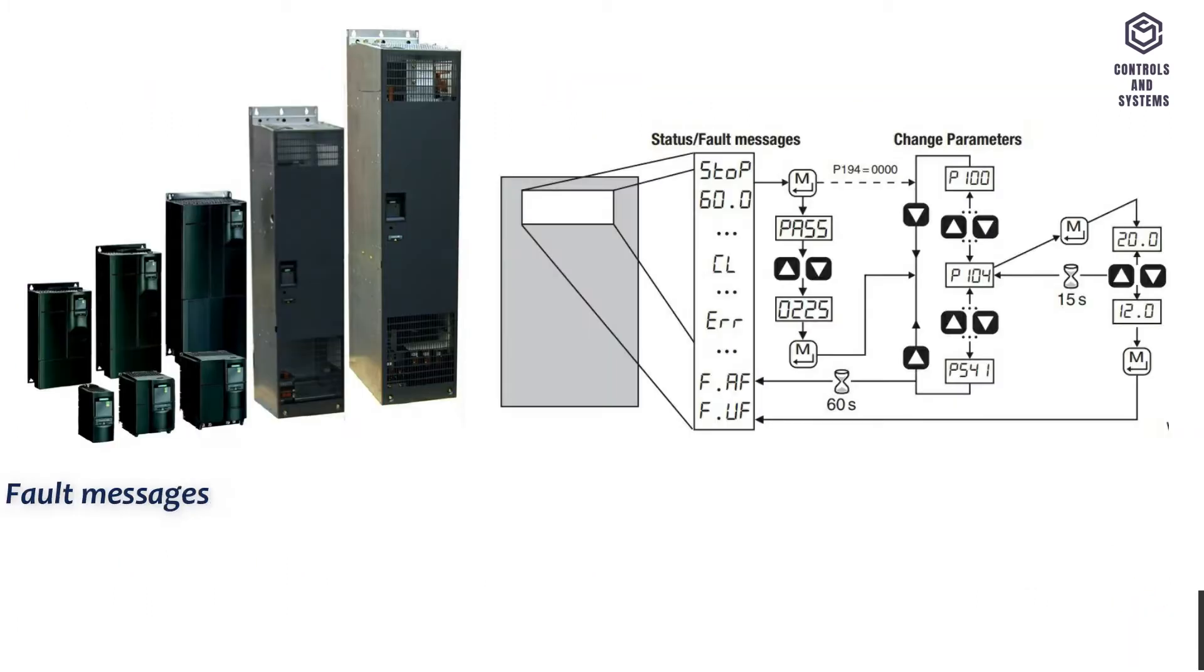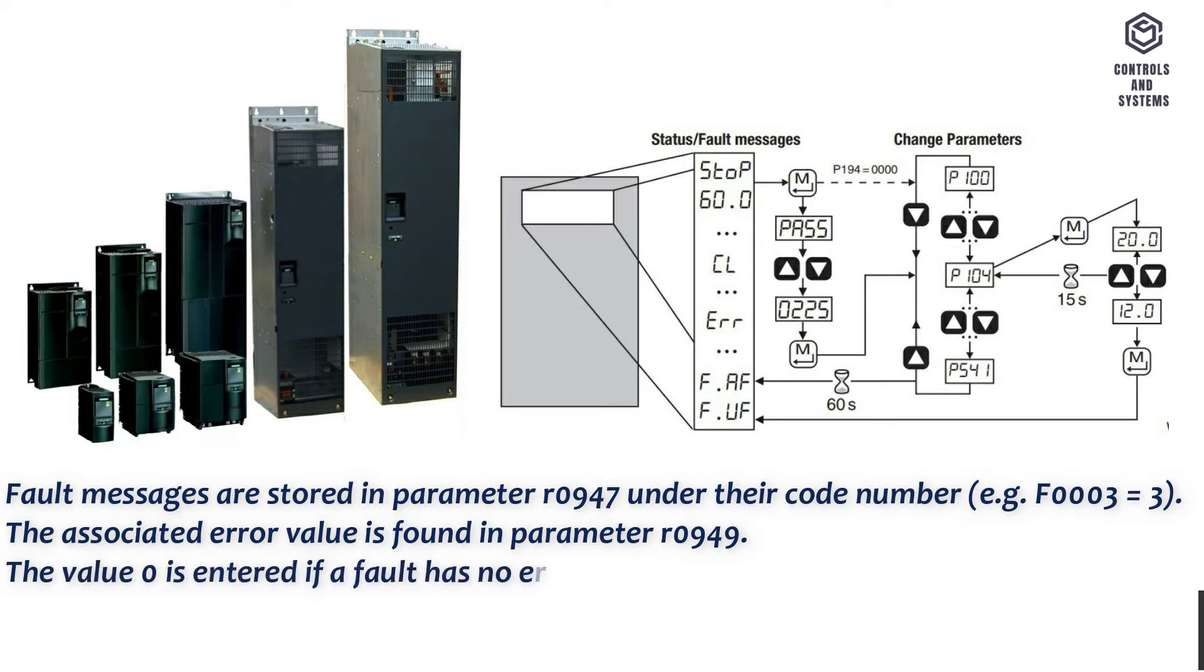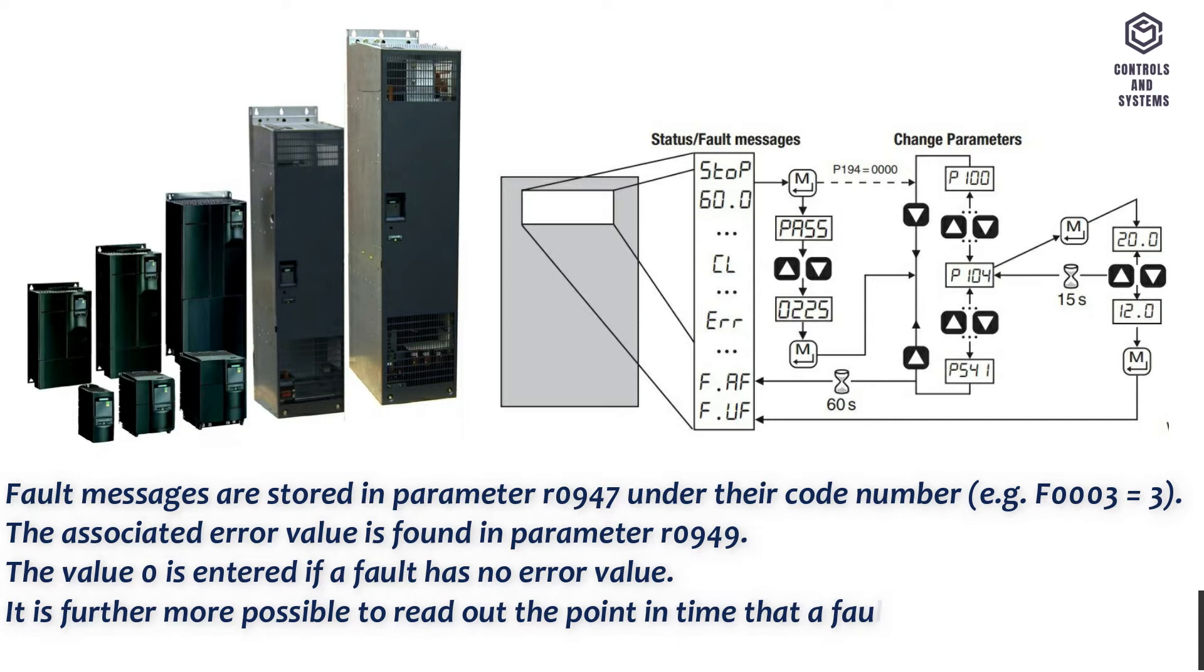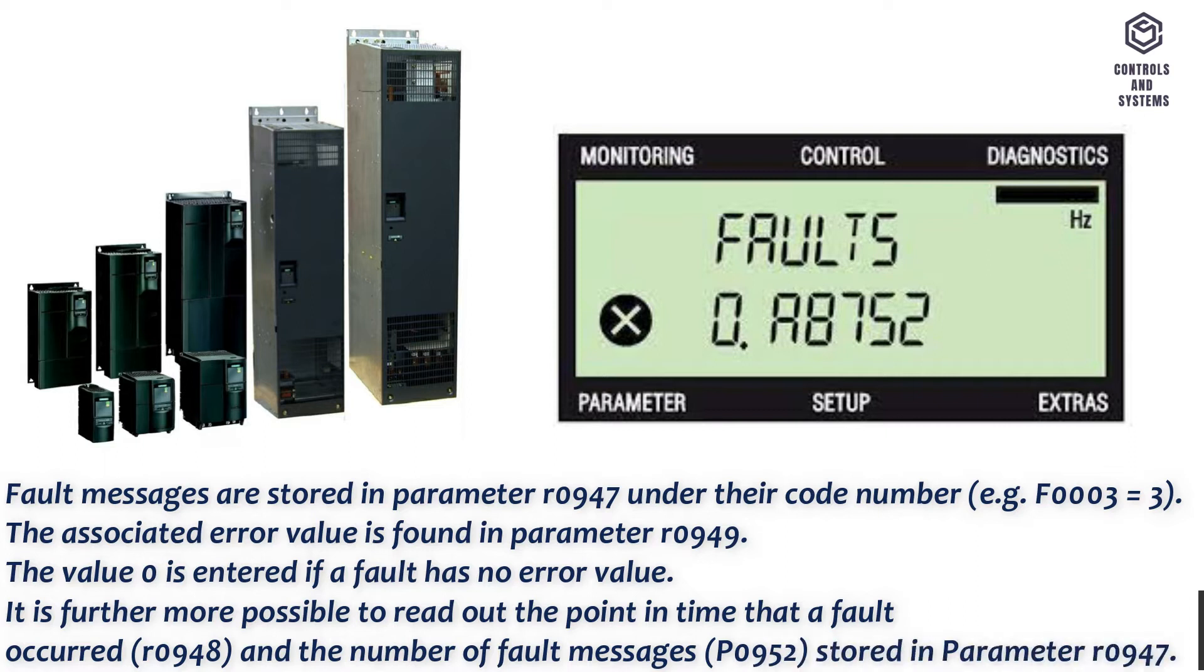Fault messages are stored in parameter R0947 under their code number, for example F0003 equals 3. The associated error value is found in parameter R0949. The value 0 is entered if a fault has no error value. It is furthermore possible to read out the point in time that a fault occurred, R0948, and the number of fault messages, P0952, stored in parameter R0947.